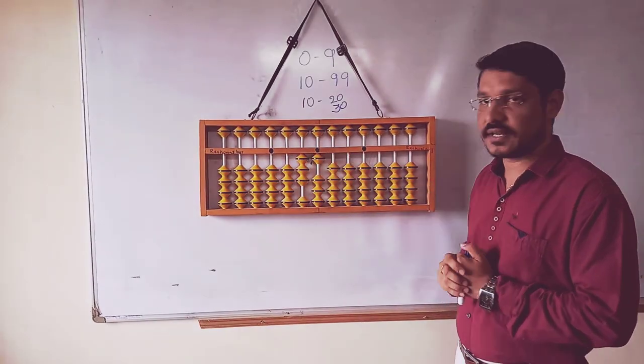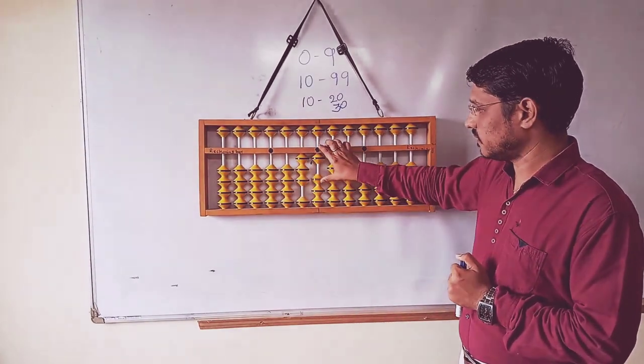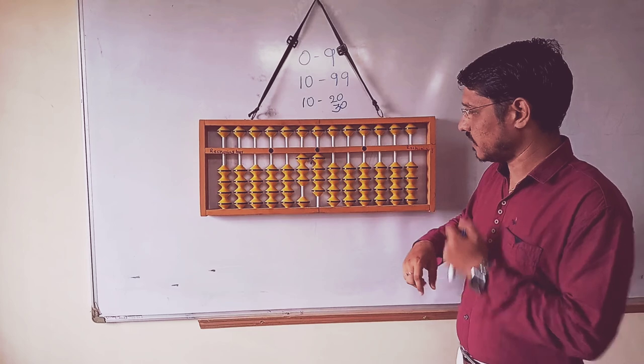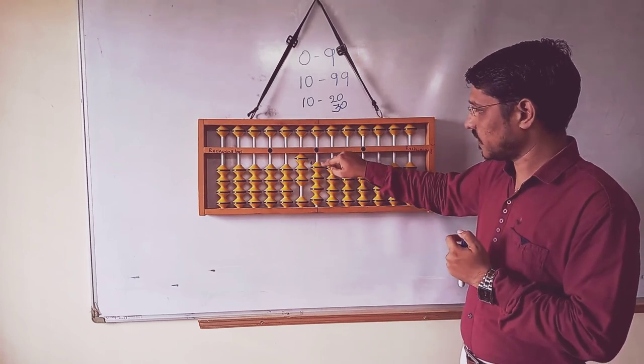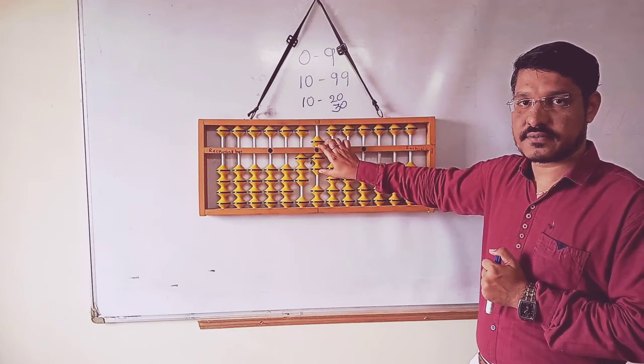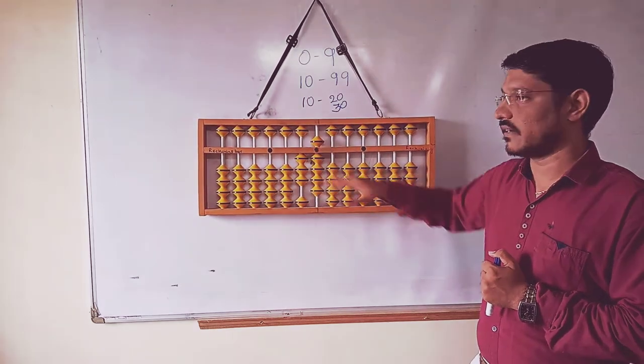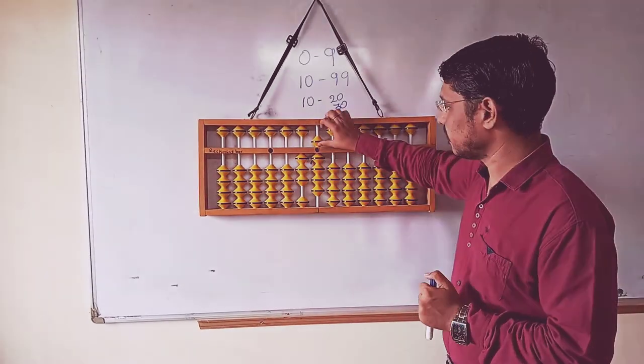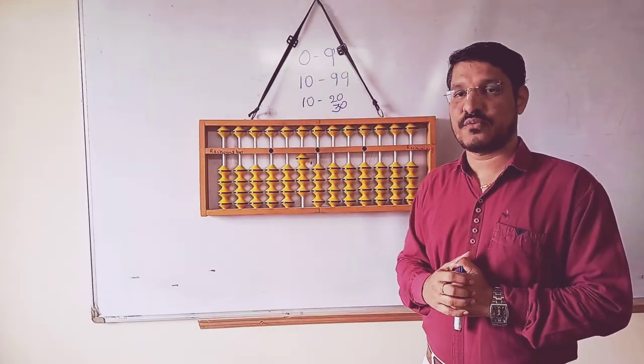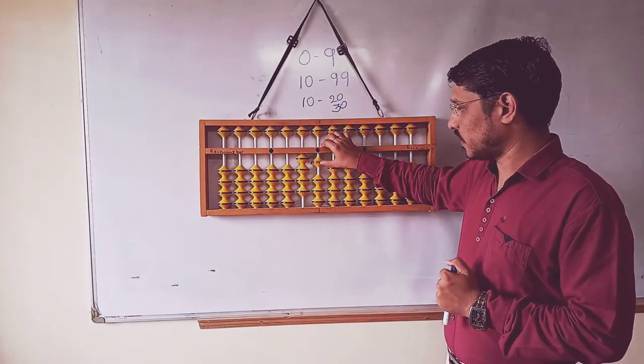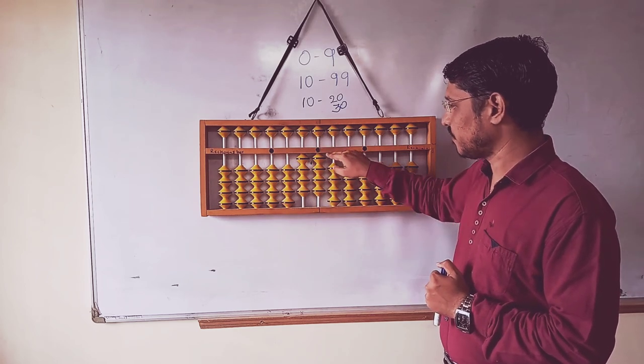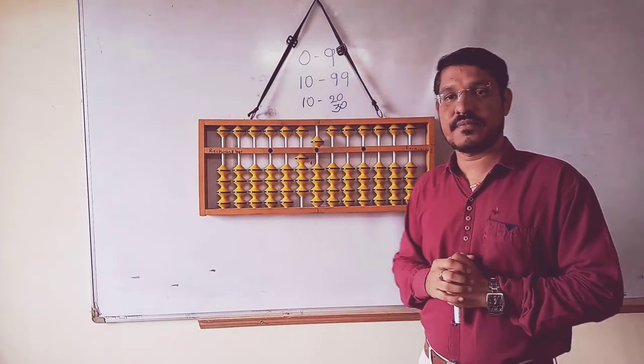3, 1, 31. 3, 2, 32. 3, 3, 33. 3, 4, 34. 35, 36, 37, 38, and 39.